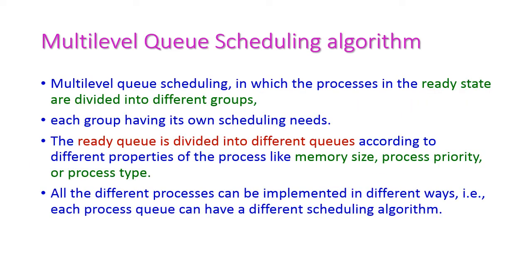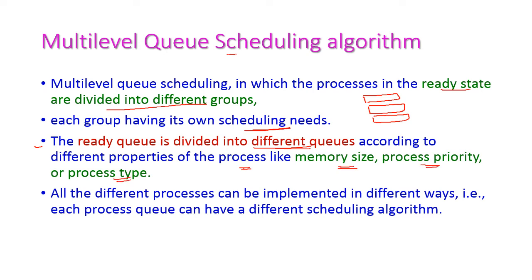Next is multi-level queue scheduling algorithm. This means the processes in the ready queue are divided into different groups, so there are multiple ready queues. Each group has its own scheduling needs. The ready queue is divided into different queues according to different properties of the process, like memory size, process priority, and process type. Based on the requirement, each queue will follow a different scheduling algorithm. Each process queue can have a different scheduling algorithm.